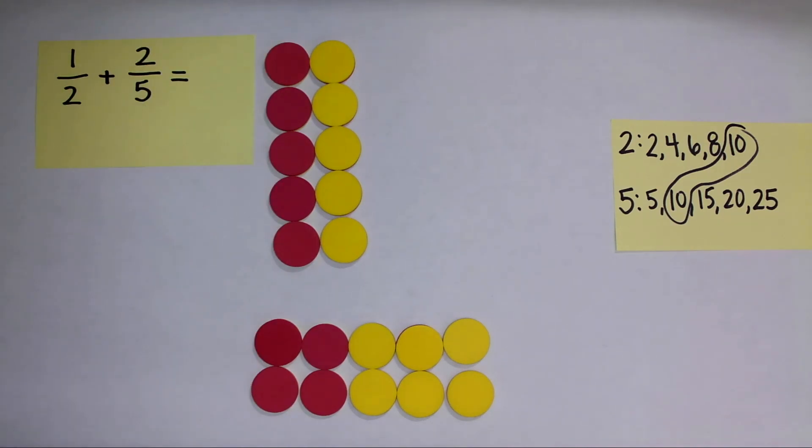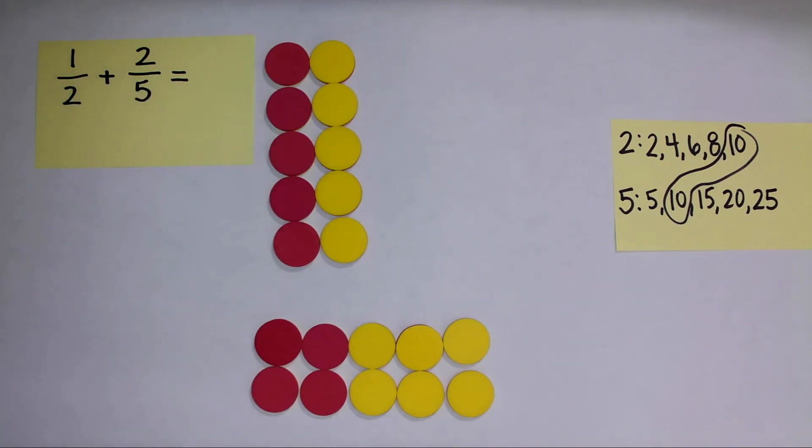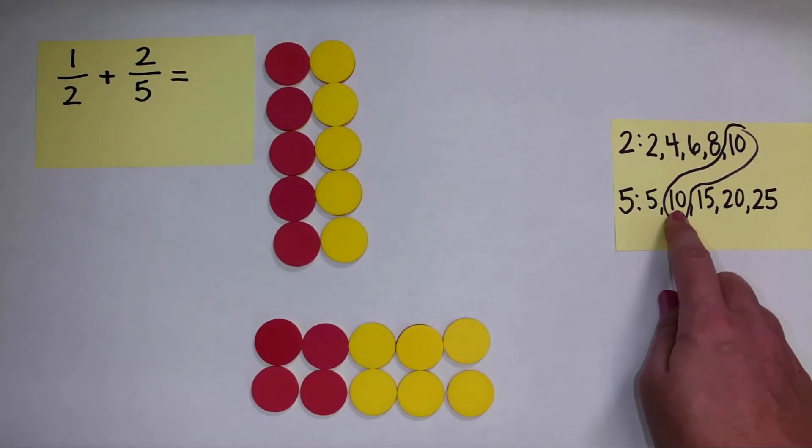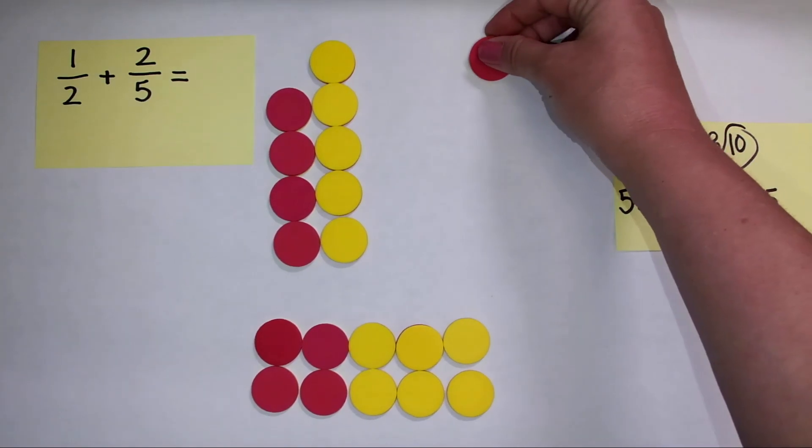Now for this fraction, each of the counters has a value of one tenth. And for this fraction, each of the counters has a value of one tenth. Now I'm going to add the fractions together by adding the parts of the fraction. But remember, I'm always going to be making groups of ten because ten is my common denominator. So let's go ahead and add the parts of the fraction. I'll move them over here.